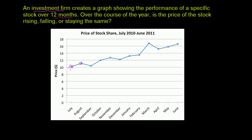So on a month-to-month basis, for example, from July to August the price went up. Then from August to September the price went down. Then it went up for two months, then down for a month, then up for a couple more months. Then it went really up from February to March, all the way up to almost $17. Then it went down again, and then it kept going up again.